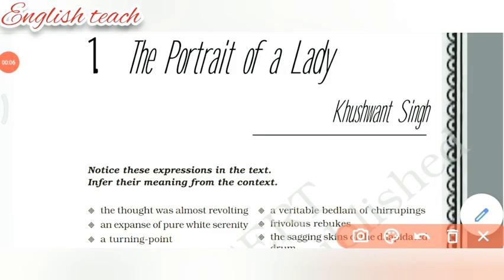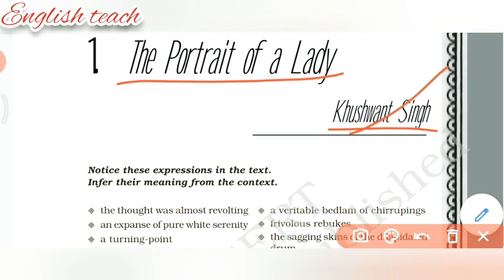The Portrait of a Lady, chapter 1, written by Khushwant Singh. The story is about the author Khushwant Singh describing his relationship with his grandmother over the years. He wrote down his daily activities and how she evolved as a character as time passed. Many changes took place in their relationship. He explains her appearance, which helps us create an idea in the mind.